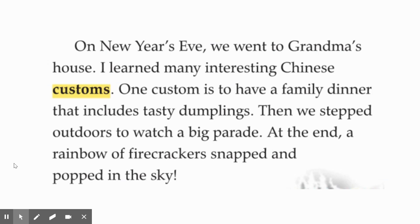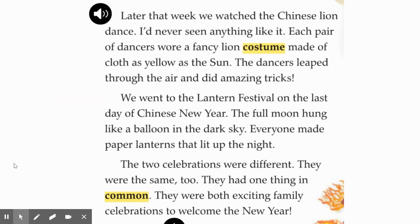On New Year's Eve, we went to grandma's house. I learned many interesting Chinese customs. One custom is to have a family dinner that includes tasty dumplings. Then we stepped outdoors to watch a big parade. At the end, a rainbow of firecrackers snapped and popped in the sky. Later that week, we watched the Chinese lion dance. Each pair of dancers wore a fancy lion costume made of cloth as yellow as the sun. The dancers leaped through the air and did amazing tricks. We went to the lantern festival on the last day of Chinese New Year. The full moon hung like a balloon in the dark sky. Everyone made paper lanterns that lit up the night. The two celebrations were different, but they were the same too — they both were exciting family celebrations to welcome the new year.